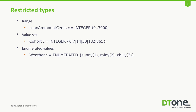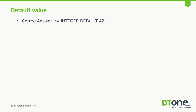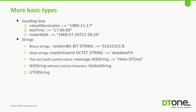You can also restrict the types. For example, you can restrict integers' values into ranges. You can define sets from integers as well, or from other types, and you have these enumerated values. When you look at enumerated, you see that they are represented as integers at the end of the day, and you are mapping them into symbols. You can also define a default value with the keyword DEFAULT.